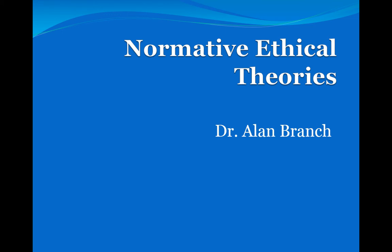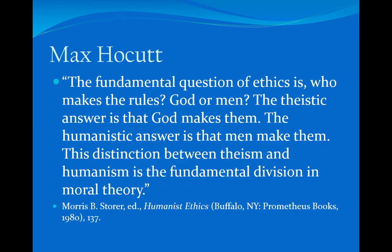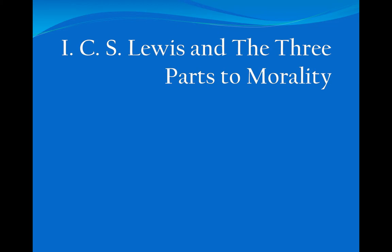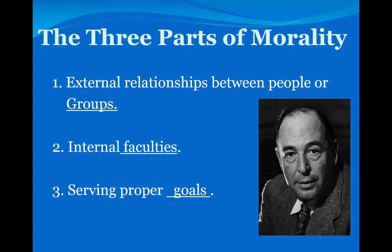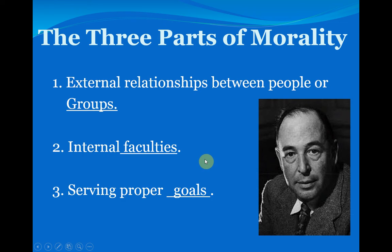Before we talk about deontology, C.S. Lewis provides us with a way of thinking about normative ethics called the three parts to morality. It comes from his book Mere Christianity. Lewis said there are really three parts to morality: external relationships between people or groups, internal faculties — how we work on the inside in our spirit — and then serving proper goals. These three parts really represent three ways of doing ethics, three ways of thinking about ethics for us as Christians.